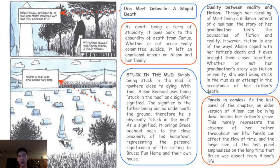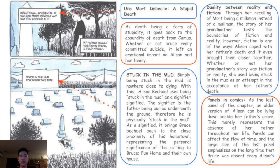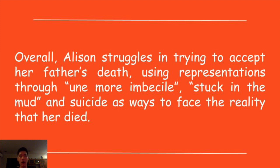In terms of the comic panels, the last panel is quite large — more than half the page — encapsulating the time period of the comic. It shows an older version of Alison lying down beside her father's gravestone, representing the absence of her father throughout her life. The larger panel emphasizes the long length of her father's absence, as he was not physically present in her life for quite a long time. The topic sentence concludes: overall, Alison struggles to accept her father's death using representations through 'Une Mort Imbécile,' stuck in the mud, and suicide as ways to face the reality that her dad died.